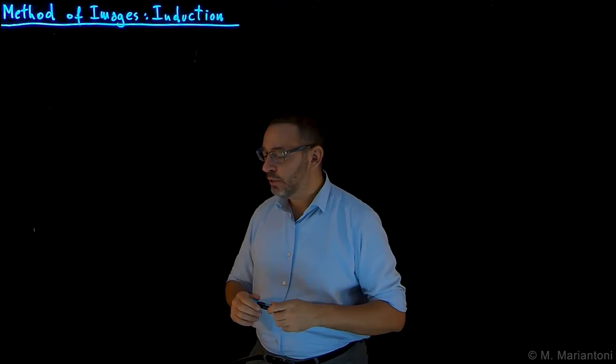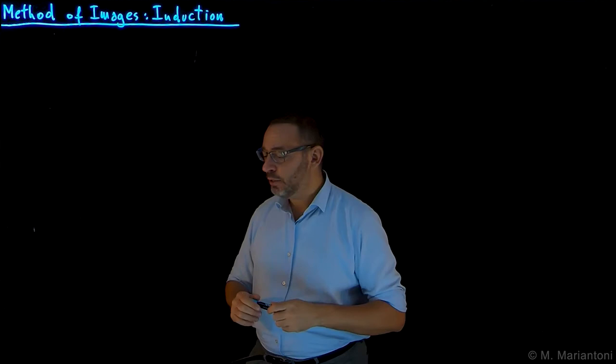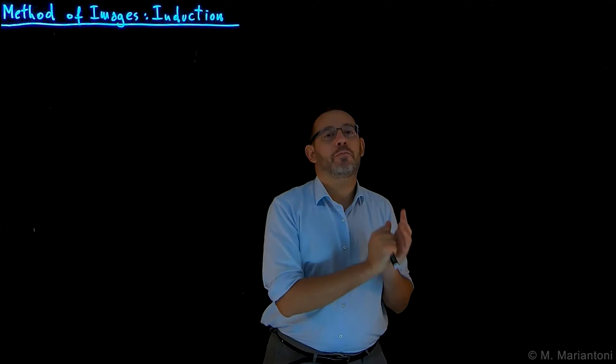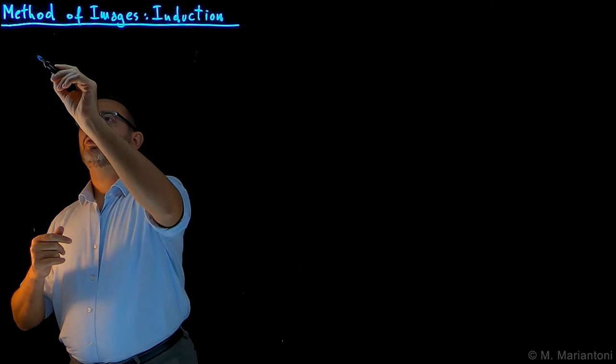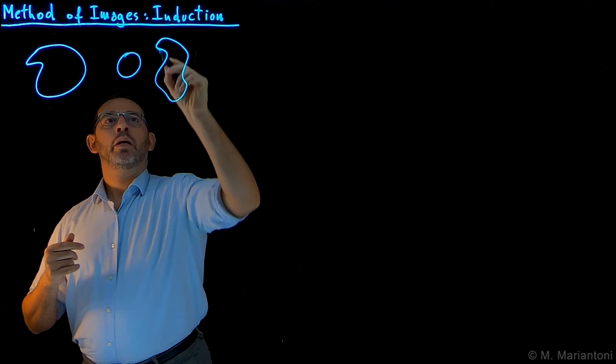In this first video of the series, we revisit the concept of electrostatic induction which we've seen in FIS 242. To revisit this concept, let me start with a generic distribution of conductors in space — a set of conductors: one conductor, another conductor, another conductor, and so on. You can have many of them.